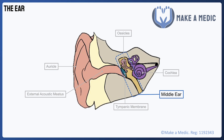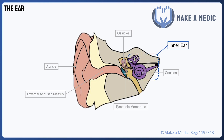These ossicles will amplify and transmit the sound vibrations to the cochlea of the inner ear, which contains the organ of Corti, the sensory organ for sound. Within the organ of Corti, there are hair cells, which serve as the sensory receptors and transform the sound vibrations into electrical impulses.